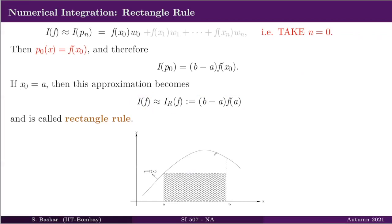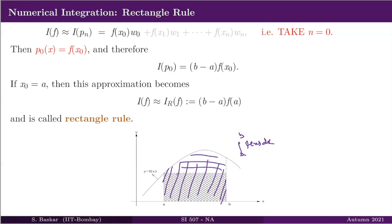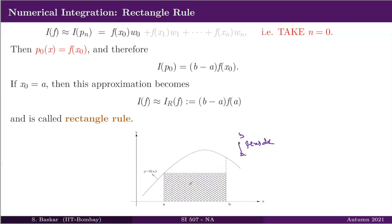Geometrically, suppose the graph of the function is shown as a solid line. The integral from a to b of f(x) dx is the area under the graph bounded by x=a and x=b. What we get from the rectangle rule is only the area of the rectangle with base (b-a) and height f(a). The error is the difference between the true area under the curve and the area of this rectangle.